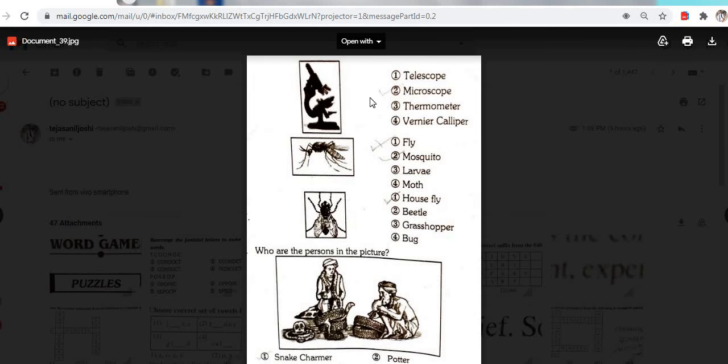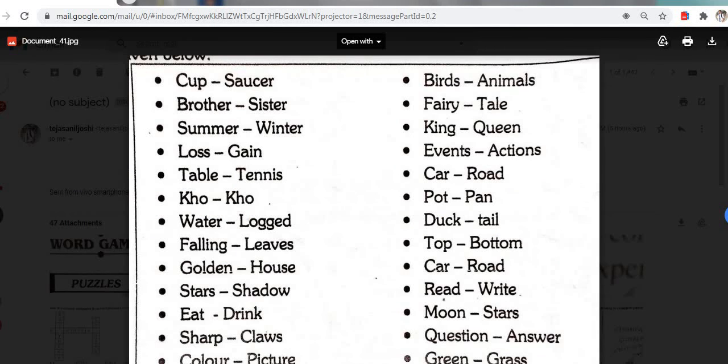This is the telescope. Option 1. This is mosquito. Option 2. This is a housefly. Option 1. And this is? Who are the persons in the picture? Snake charmer. Right answer. Related words. Read these words. Cup, saucer. Brother, sister. Summer, winter. Loss, gain. Table, tennis. Kho-kho. Water, melon. Green, golden. Hound. Star, shadow. Eat, drink. Sharp, class. Color, picture. Birds, animals. Fairing, tail. Clown, green. Events, actions. Car, road. Port, land. Duck, tail. Top, bottom. Car, road. Read, ride. Moon, stars. Question, answer. Green, grass. These words are related to each other.